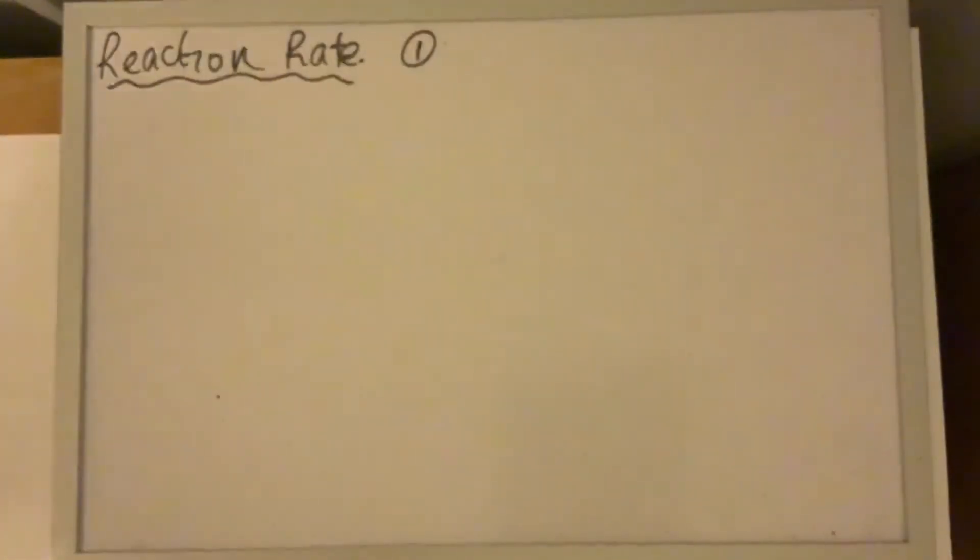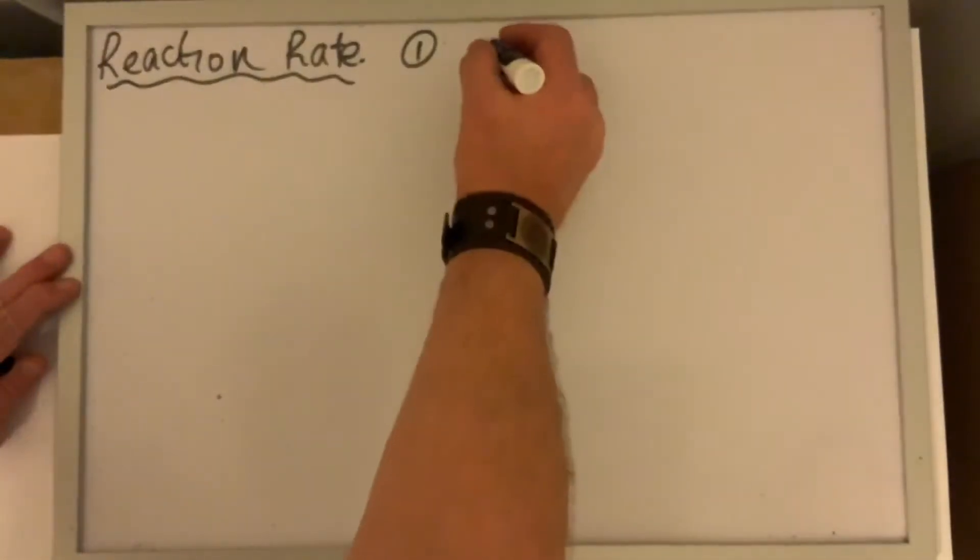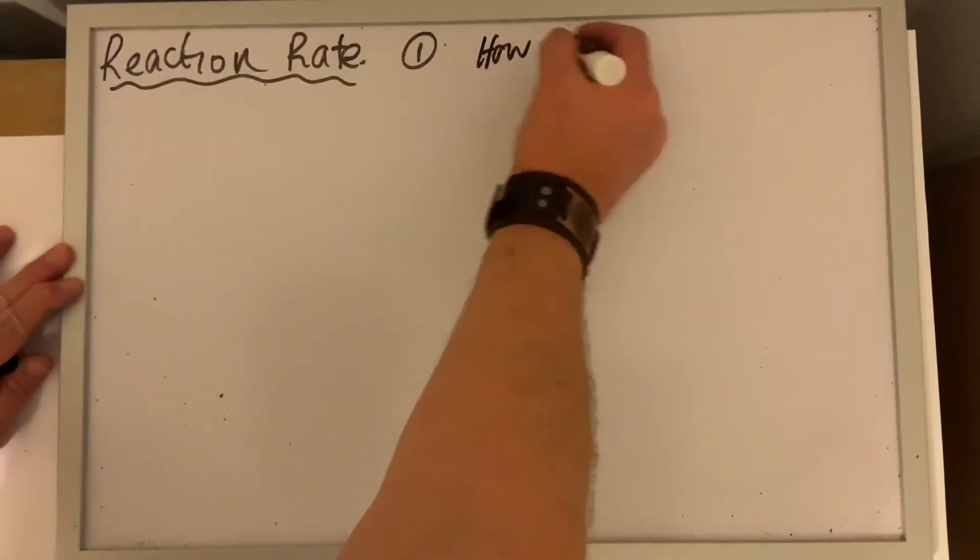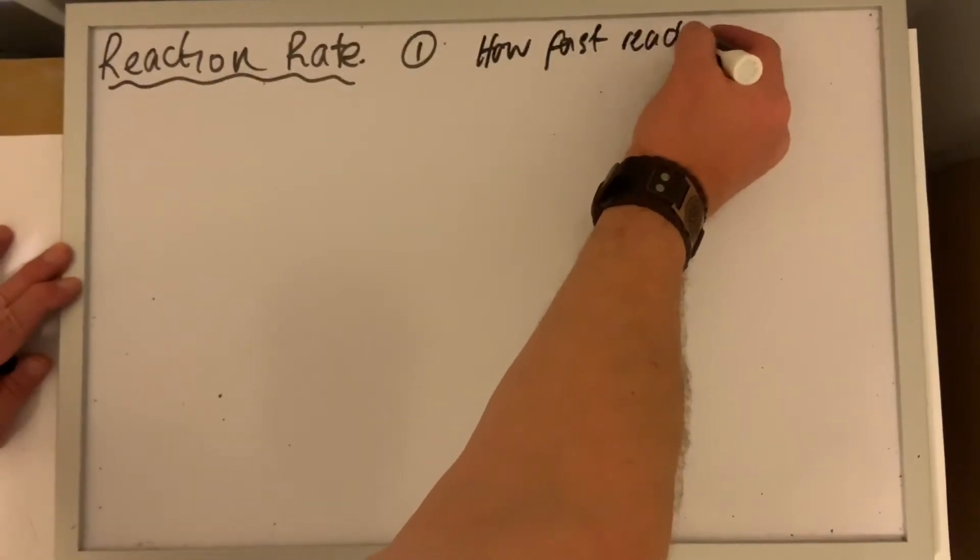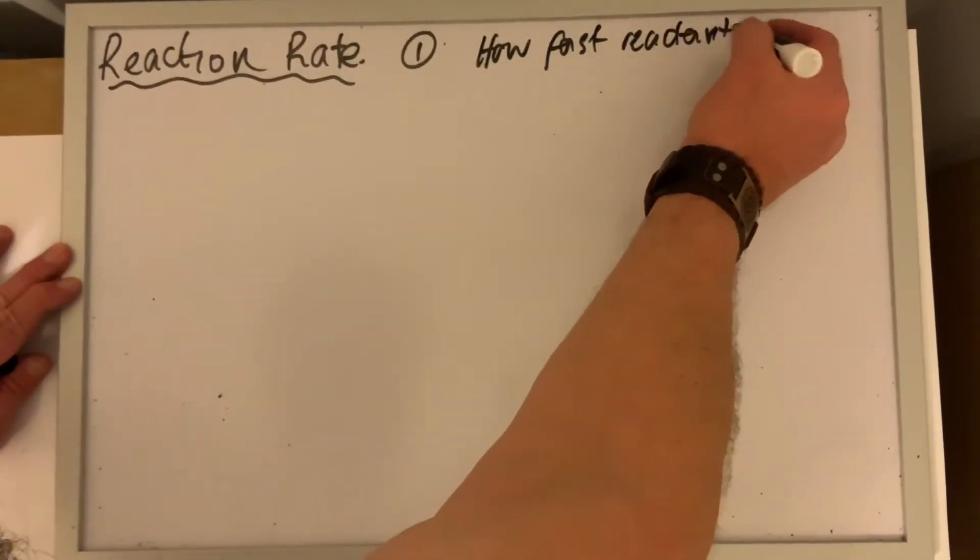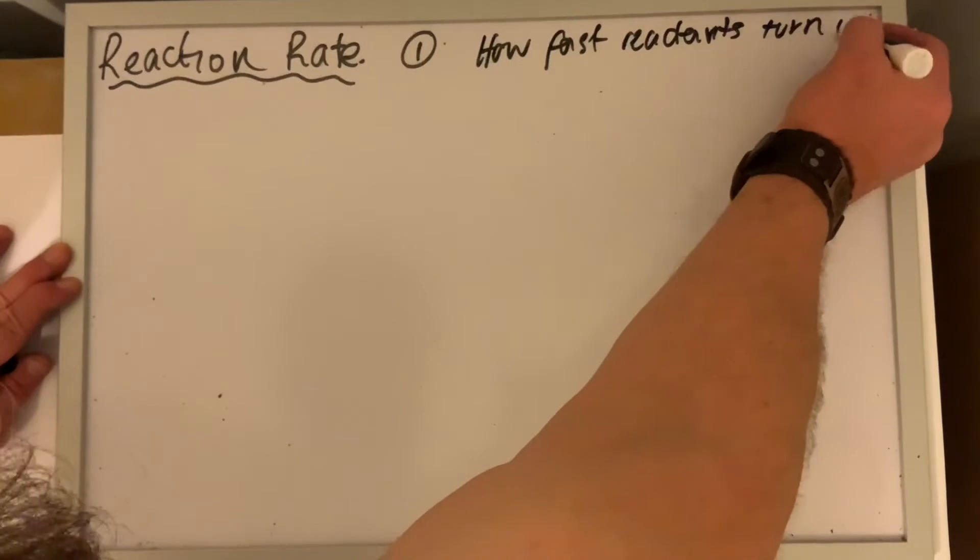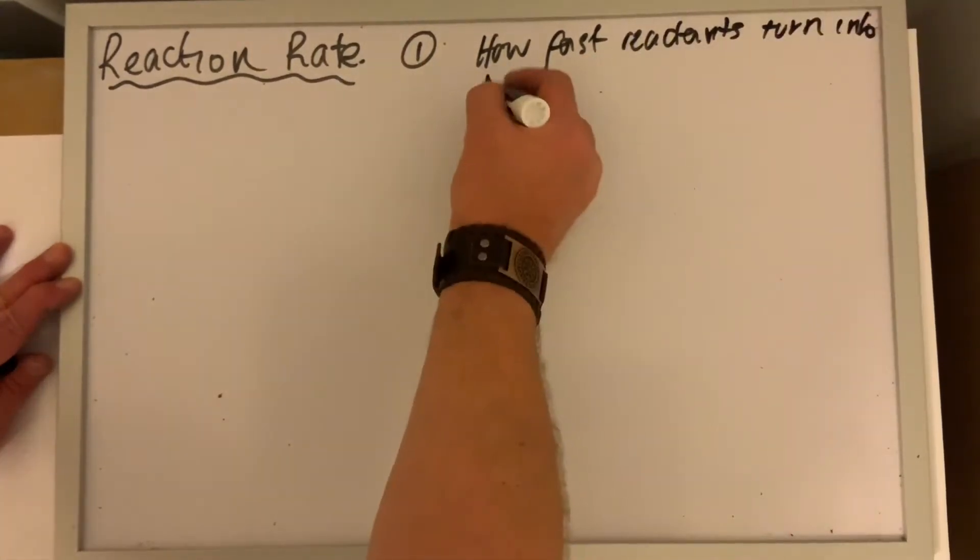Reaction rate is how fast a reaction occurs - how fast reactants turn into products.